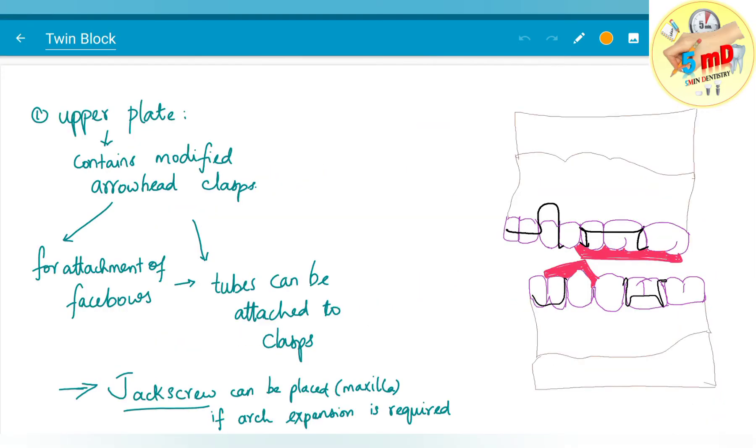We should also remember that myofunctional appliance works by VTO. VTO is visualized treatment objective. If VTO is positive, it is useful to fabricate a myofunctional appliance.